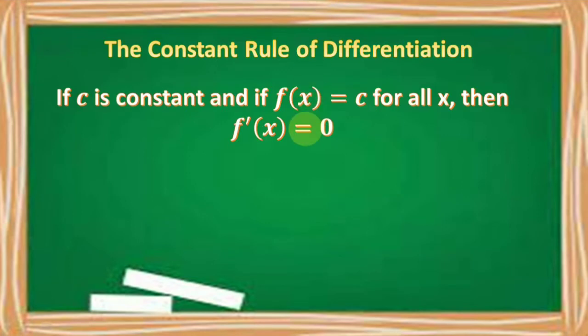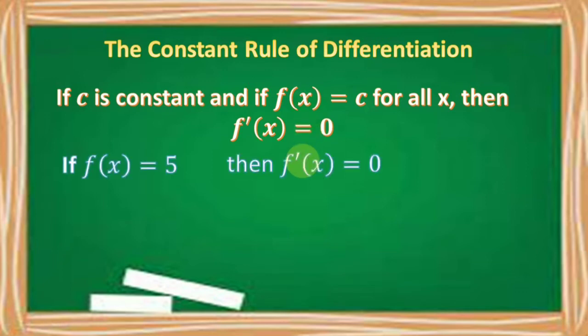For the constant rule of differentiation, it says here that if c is a constant and if f of x is equal to c for all x, then f prime of x or its derivative is equal to 0. For example, if f of x is equal to 5, then f prime of x or its derivative is equal to 0.